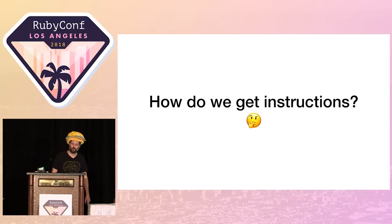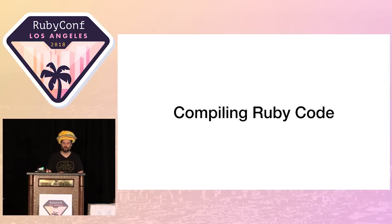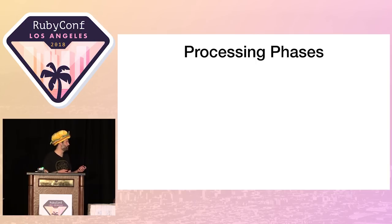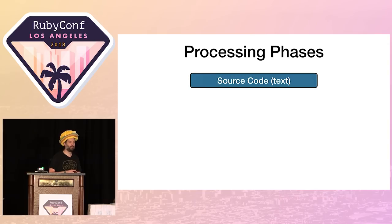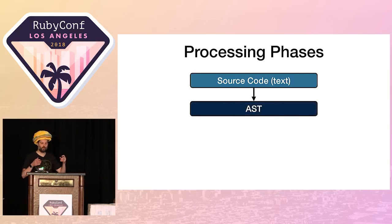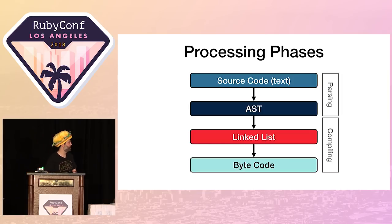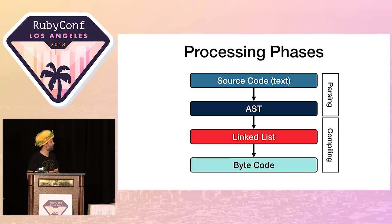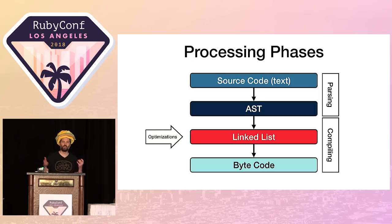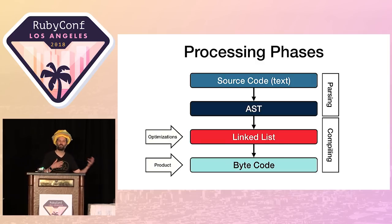Your Ruby programs are actually compiled before they're ever run — compiled into bytecode. The phases are: source code → AST → linked list → bytecode. We can break these into parsing and compiling. The linked list phase is where optimizations are applied — if any code is dead it gets removed there, or peephole optimizations happen, because linked lists are easy to manipulate. Finally the linked list is turned into bytecode, which is our product — that's the thing we actually execute.